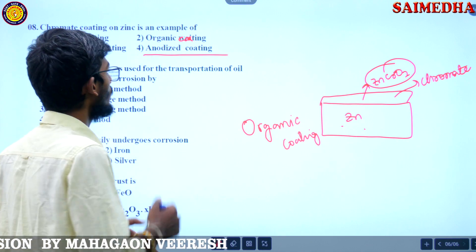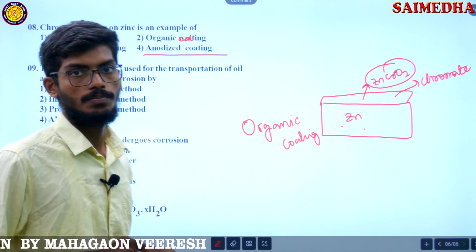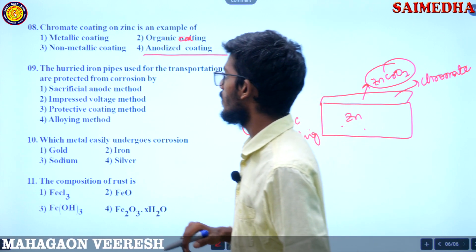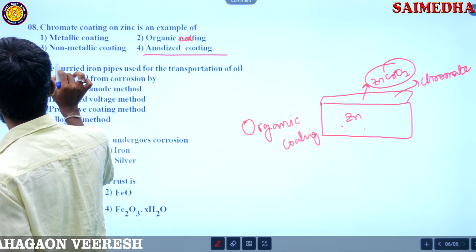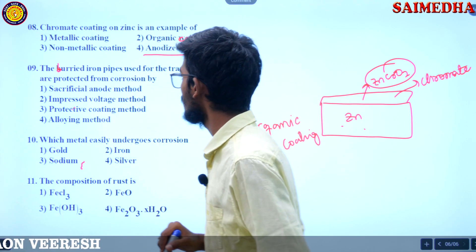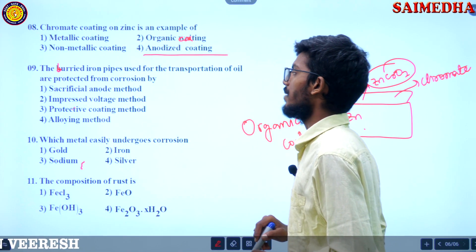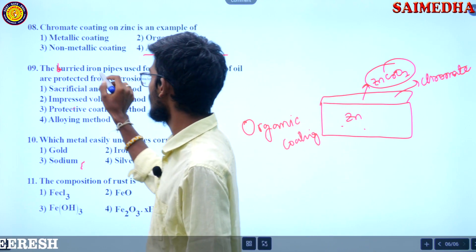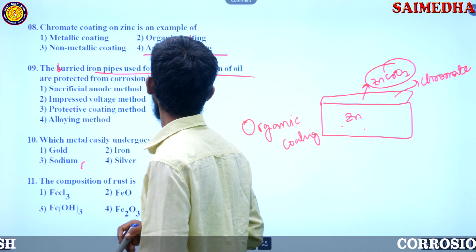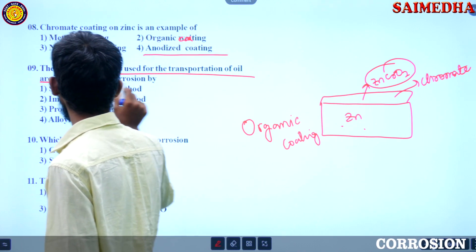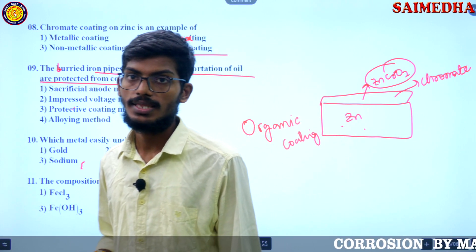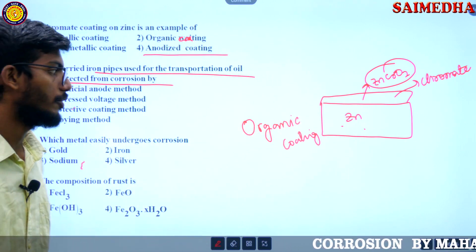So, chromate coating on zinc is an example of organic coating. Now the next question: the buried iron pipes used for the transportation of oil — how are they protected from corrosion?